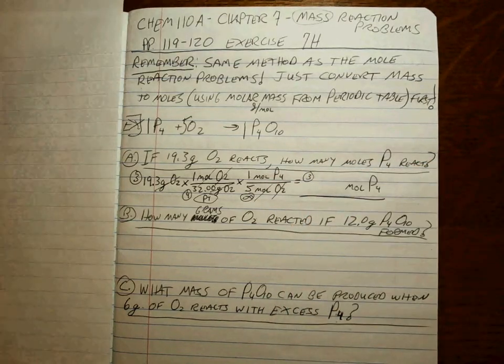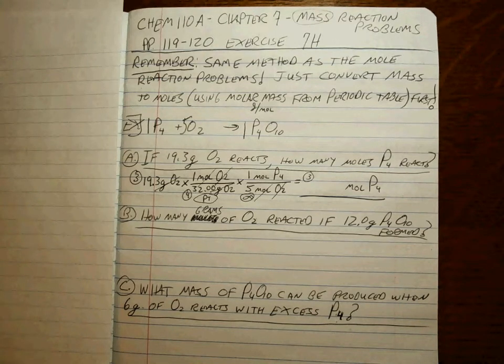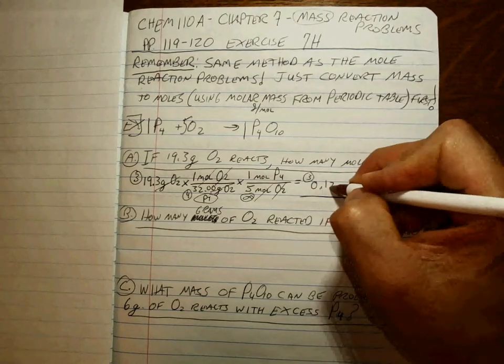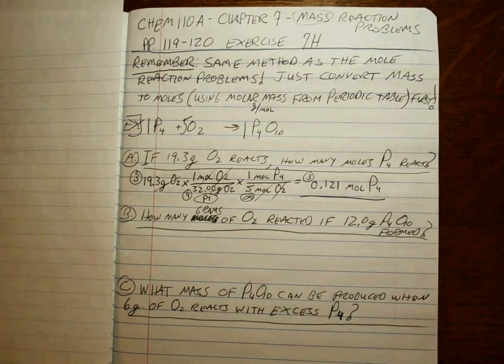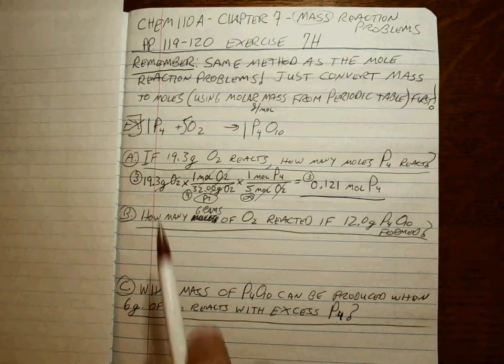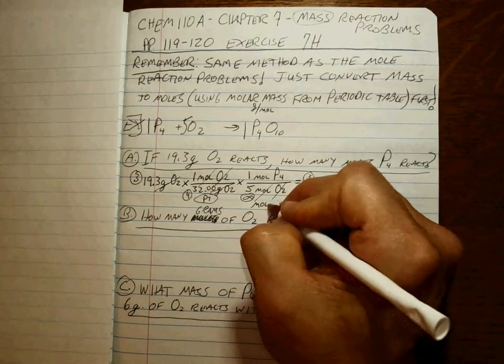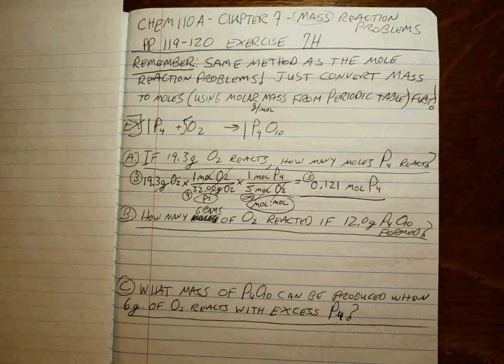So now it's just a case of punching it in your calculator, seeing what you get. 19.3 divided by 32 divided by 5 is equal to, to 3 sig figs, I get 0.121 moles of P4. Not too bad, right? Grams convert to moles, and then this is the mole-to-mole ratio. We're always going to get to that mole-to-mole ratio eventually.